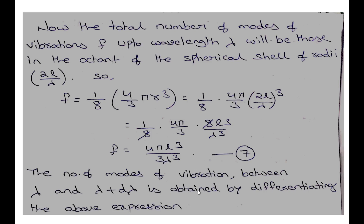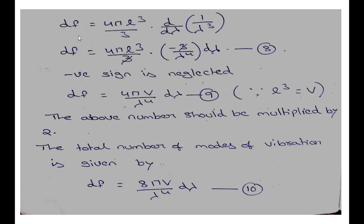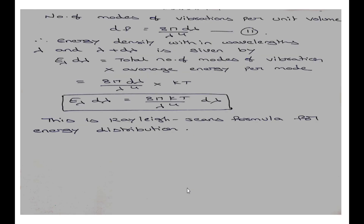The number of vibrations between λ and λ+dλ is obtained by differentiating equation 7: dN = (4πL³/3)·d/dλ(1/λ³)·dλ = 4πL³·(−3/λ⁴)·dλ. Neglecting the negative sign, and since L³ = V (volume), we get dN = 4πV/λ⁴·dλ. Multiplying by 2 for two polarizations: dN = 8πV/λ⁴·dλ. The number of modes per unit volume is 8π/λ⁴·dλ.